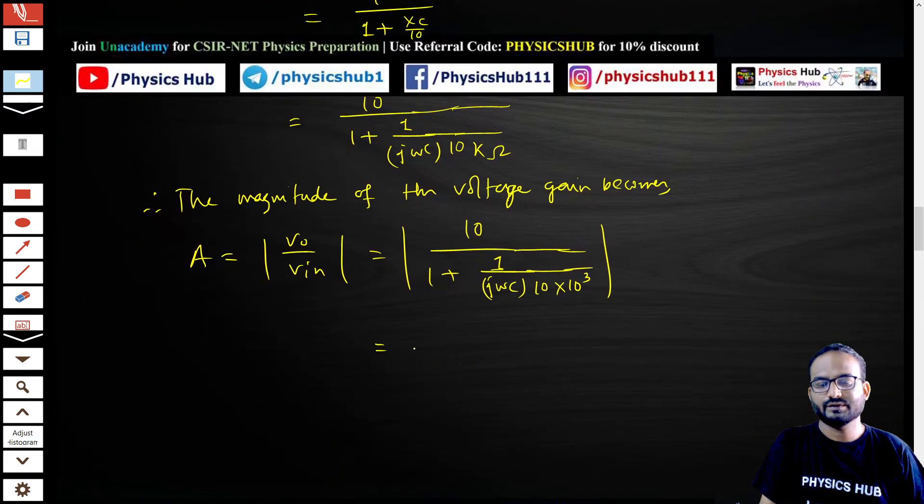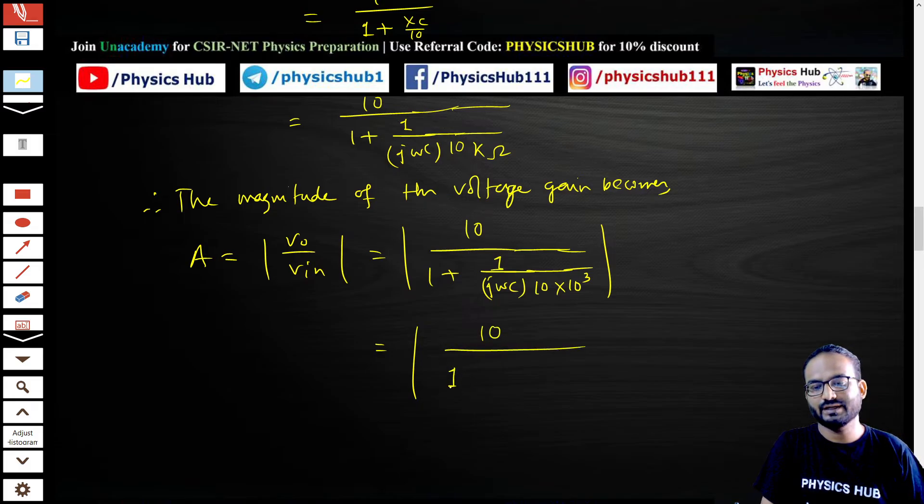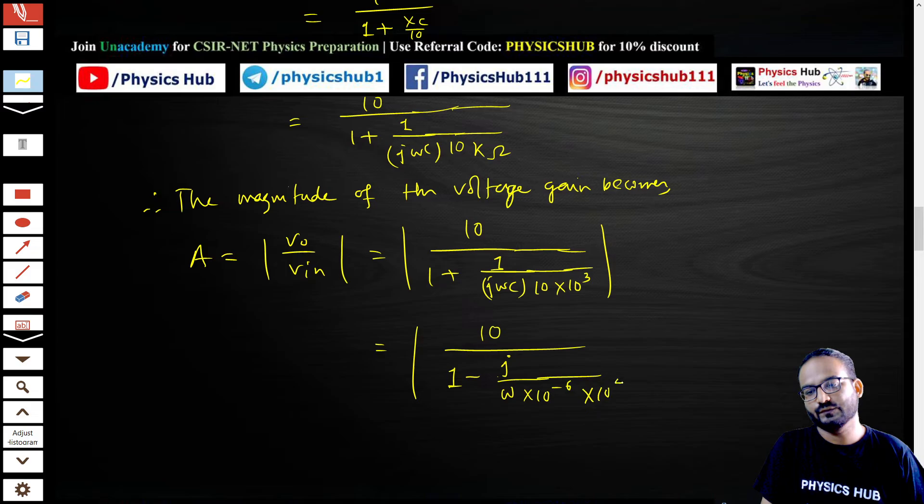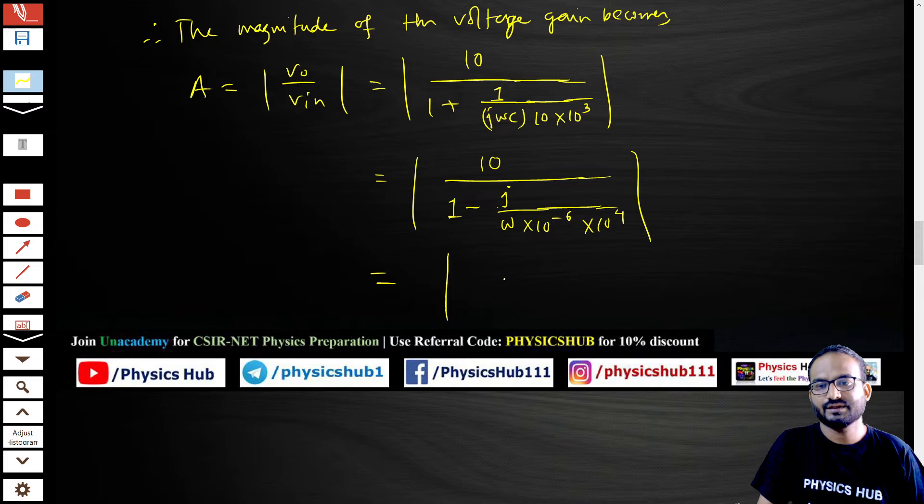If you put the value of the capacitor, which is given to you as one microfarad, 10 to the power minus 6, and we are taking this j up, so this is minus j divided by omega C is 10 to the power minus 6, and this 10 to the power 4.